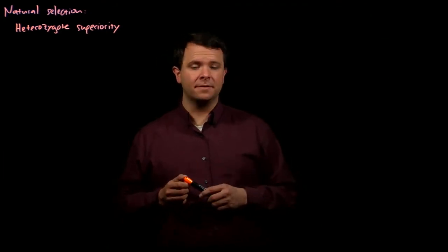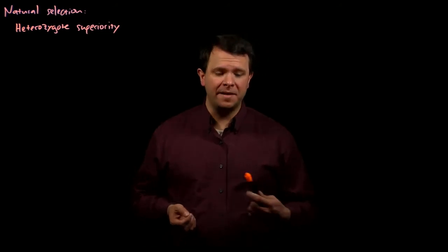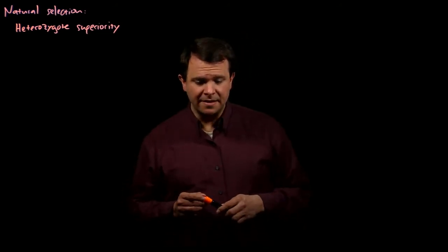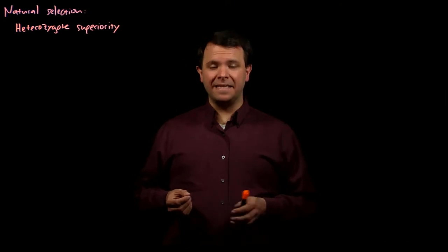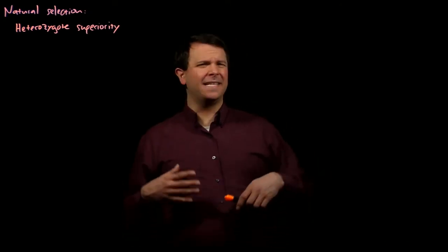The classic example here is sickle cell anemia, which is caused by a mutation in the gene for hemoglobin. When the mutant gene is homozygous, the hemoglobin proteins polymerize and cause red blood cells to deform, leading to pain, anemia, and susceptibility to infection and stroke.